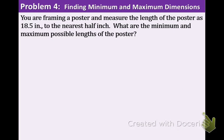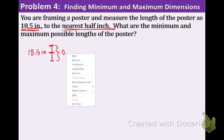Last example. You are framing a poster and measure the length of the poster as 18.5 inches to the nearest half inch. What are the minimum and maximum possible lengths of the poster? There's going to be some sort of error involved here. We're not looking for the error, we're just looking for the minimum and maximum lengths of the poster. You measured it as 18.5 inches to the nearest half inch, which means that this value is within one half of an inch. So this is 0.5.